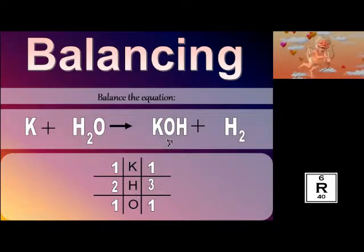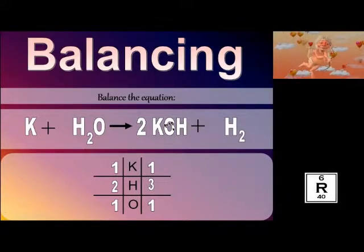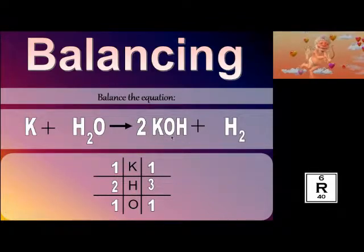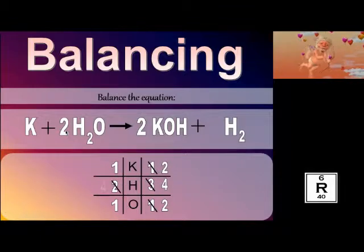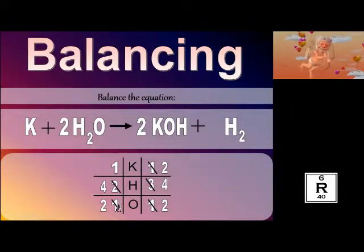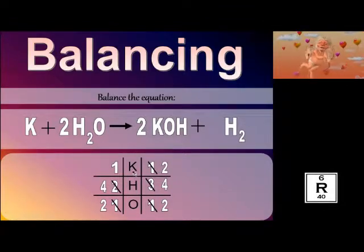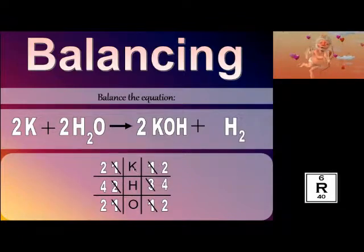I'm going to make this an even number by putting a two in front of this — that way I've got two hydrogens here and another two here, giving me four hydrogens. But that also changes my potassium and oxygen quantities. I've now got two potassiums, four hydrogens, and two oxygens. I did that so I could try to balance the hydrogen out by adding a two in front of the water. That also changed my oxygen to two, which is convenient because I have two on the other side. So the only thing not balanced now is my potassium — easy fix: put a two in front of the potassium.